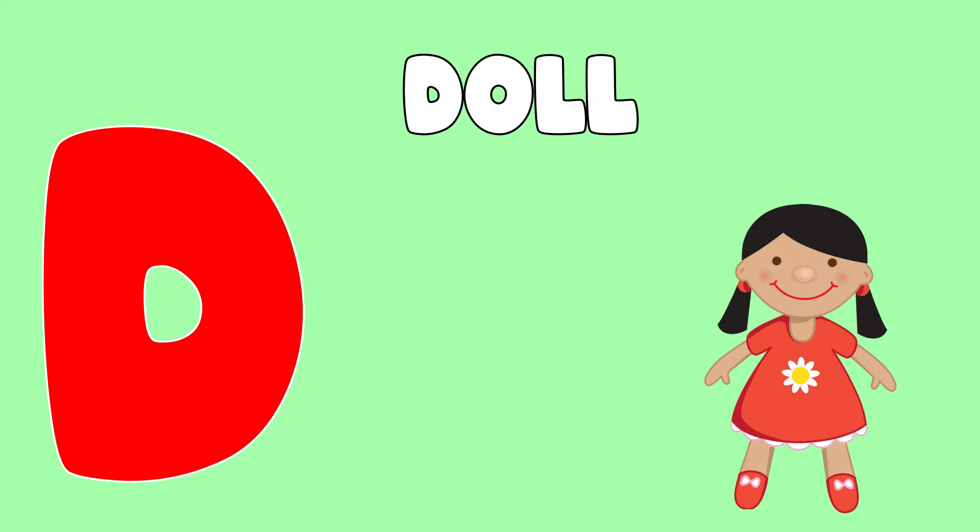M is for mat. M, mat. N is for net. N, net. O is for orange. O, orange. P is for pet. P, pet.